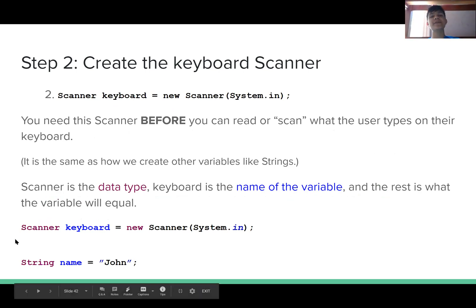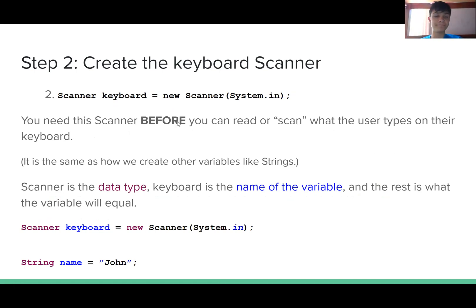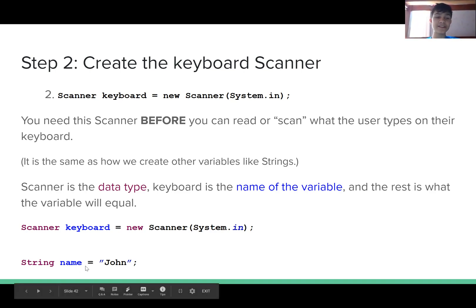The next step is to create the keyboard scanner: scanner keyboard equals new scanner system.in. You need to scan before you can read or scan what the user types on the keyboard. You may notice that this is similar to how we create other variables like strings. Since scanner is a data type, keyboard is the name of a variable and the rest is what the variable will equal. You can see the similarities between string name equals John and scanner keyboard equals new scanner system.in, although scanner keyboard is a little bit more complicated.